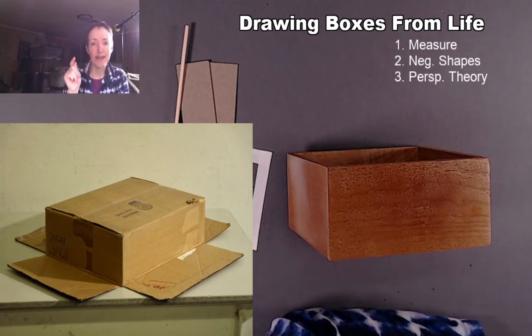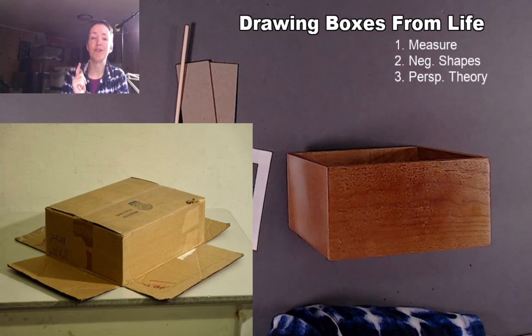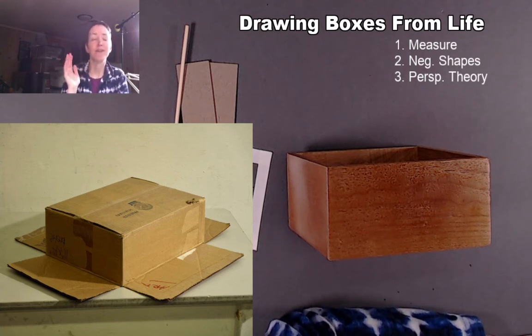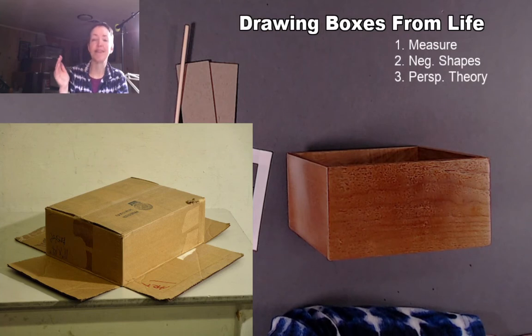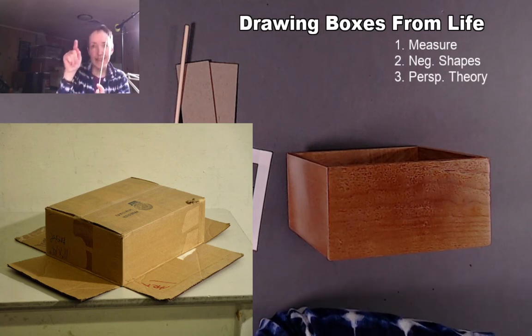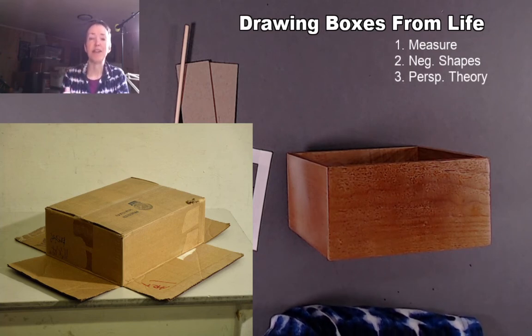You're using several skills. You're taking literal measurements. You're looking at the negative shapes. This is especially helpful when you're drawing the flaps. If a flap's really foreshortened and coming at you, those are super hard for your brain to make sense of. So looking at it just strictly as a flat shape can help you decipher that information.